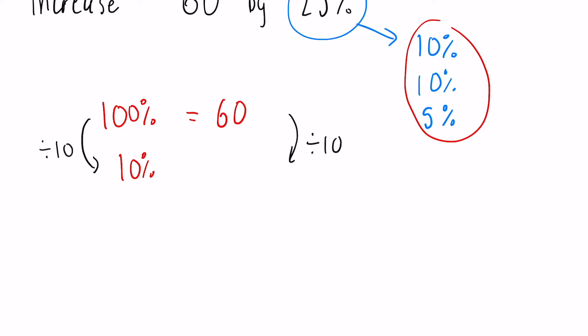Now we also need 5%, and again we could do this all the way from 100%, but 10% will be a lot easier. So to get from 10% to 5% we just divide it by 2. Again, whatever you do to one side you have to do to the other side, just like with fractions. So 6 divided by 2 is going to leave us with 3.